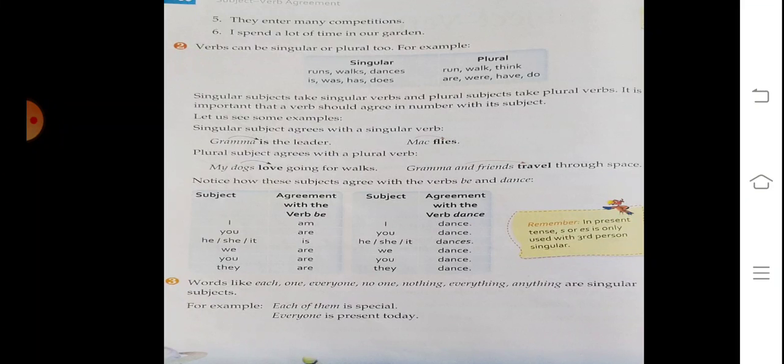Singular subjects take singular verbs and plural subjects take plural verbs. It is important that a verb should agree in number with its subject. Let us see some examples. Singular subject agrees with singular verb: 'Grandma is the leader.' If you take a singular subject, you must take a singular verb. If you take a plural subject, you must take a plural verb. You must check whether they agree with each other in number.